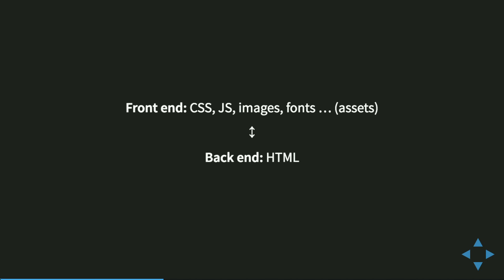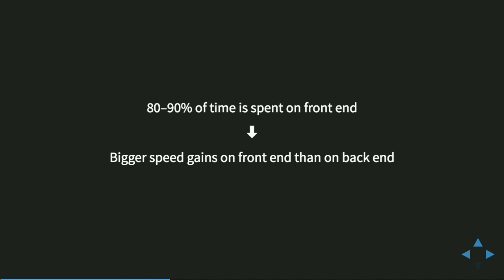The back-end traditionally is only about HTML. The front-end has to do lots of things dealing with all those assets, and the back-end has to do just one thing: HTML. That actually already suggests that 80 to 90% of the time it takes to render a page — to do a request and see something useful on the screen — is spent on the front-end, not on the back-end. We can make far bigger gains on the front-end in terms of speed, and we very often forget about that.